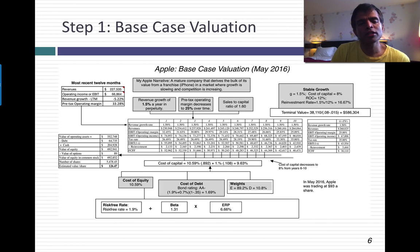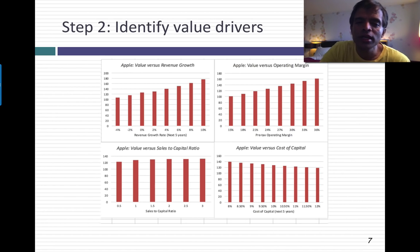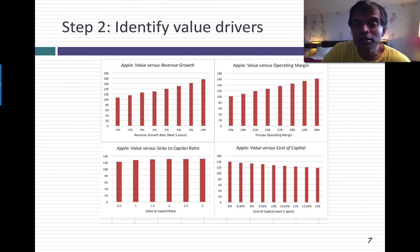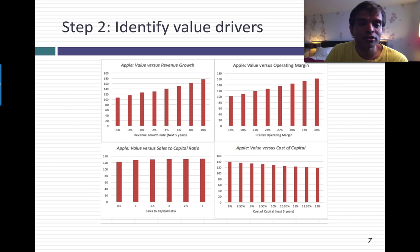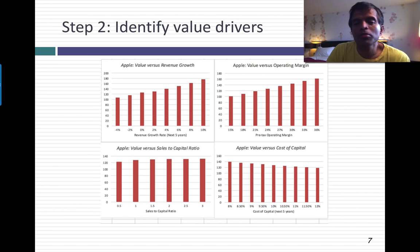The second step: I wanted to identify the key value drivers for Apple. My valuation is parsimonious — there are only four big assumptions: revenue growth, margins, sales to capital (which determines reinvestment), and cost of capital. I changed each of those four variables to see which ones affected my value the most. The results were pretty stark. Revenue growth and operating margins had big impacts on my value. The sales-to-capital ratio had almost no impact because revenue growth is so low that reinvestment is not a big factor, and the cost of capital has almost no impact either.